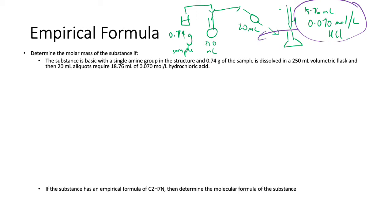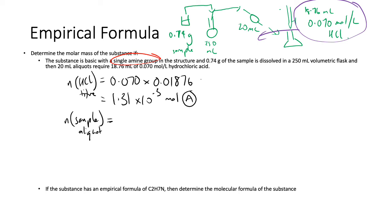Let's get started. Let's work out first of all, the number of moles of HCl, which will be equal to CV, which will be equal to 0.070 times 0.01876. Remember, you've got to convert that into liters and that gets you 1.31 times 10 to the negative 3 mol, which I'll call A. So that's the number of moles of HCl that I've got. That means I can work out now the number of moles of my sample. Just remember that that's in the titer in the aliquot. Now that I have the sample of stuff in my aliquot, it'll be a 1 to 1 ratio because it has a single amine group, 1 to 1 ratio with the acid. That means it's equal to the number of moles of HCl, which will be equal to A.